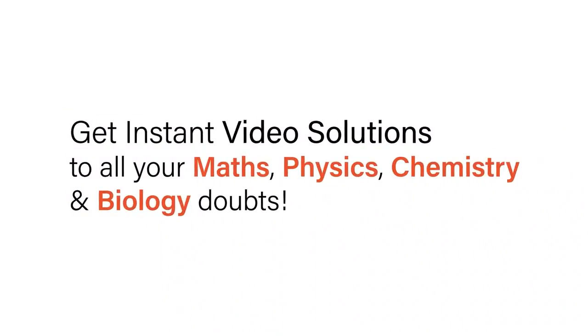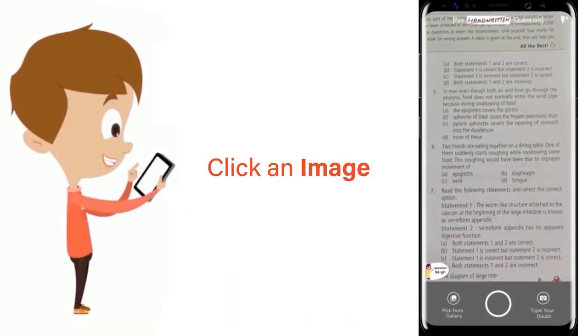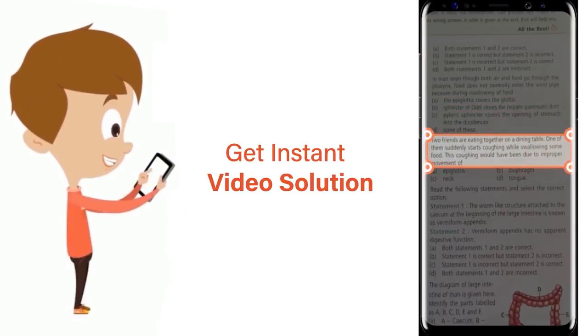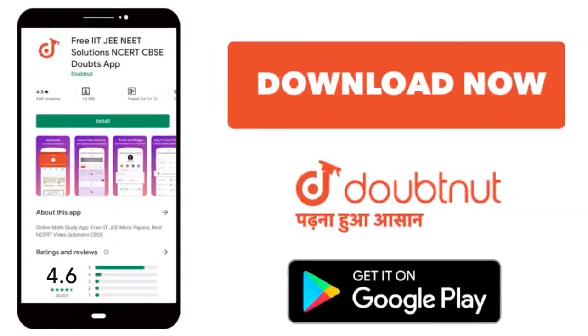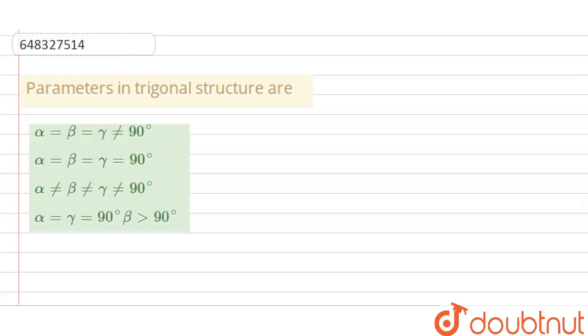With Doubtnet, get instant video solutions to all your math, physics, chemistry, and biology doubts. Just click the image of the question, crop the question, and get instant video solution. Download Doubtnet app today. Hello students, the question is: parameters in trigonal structure.